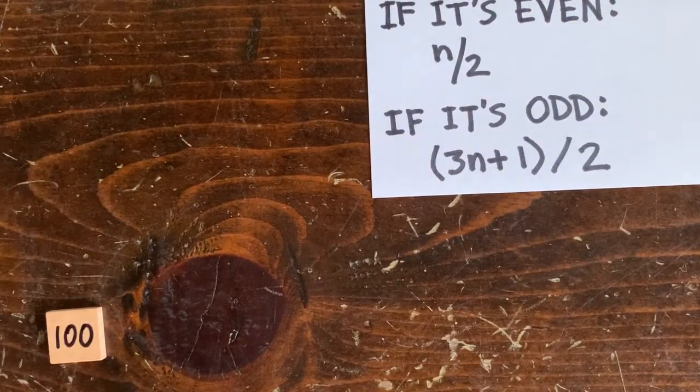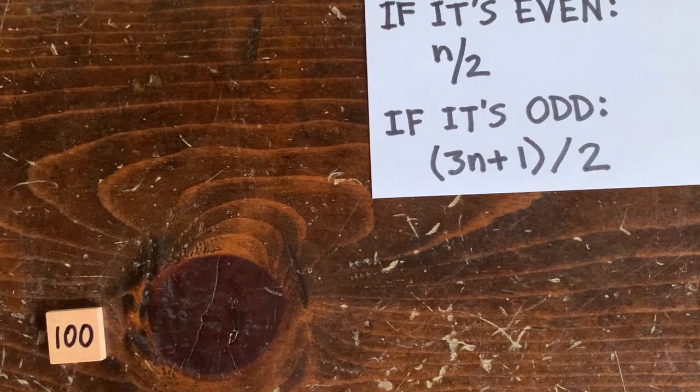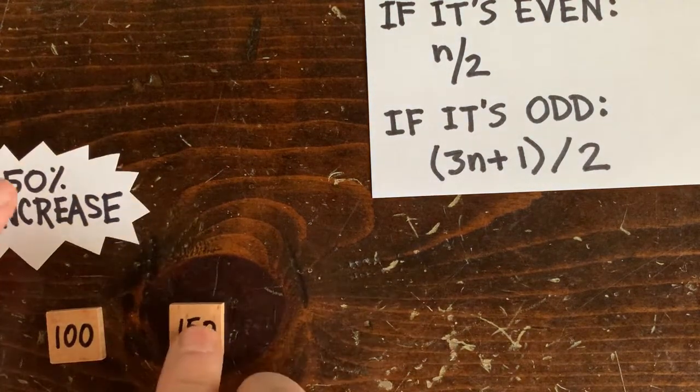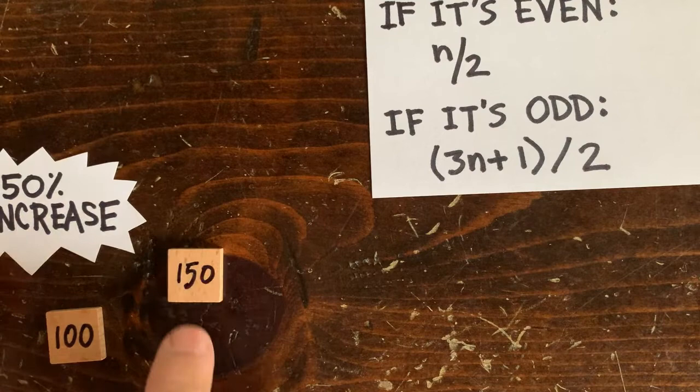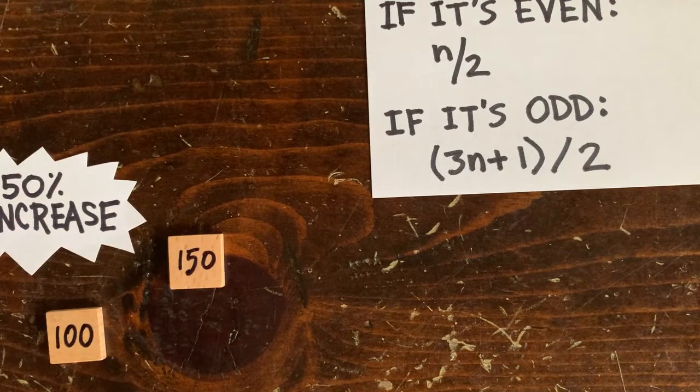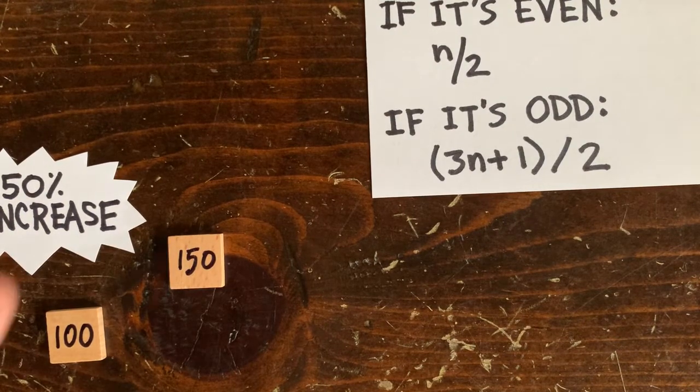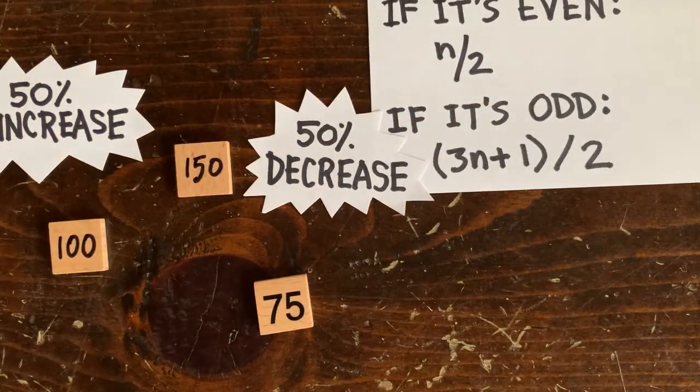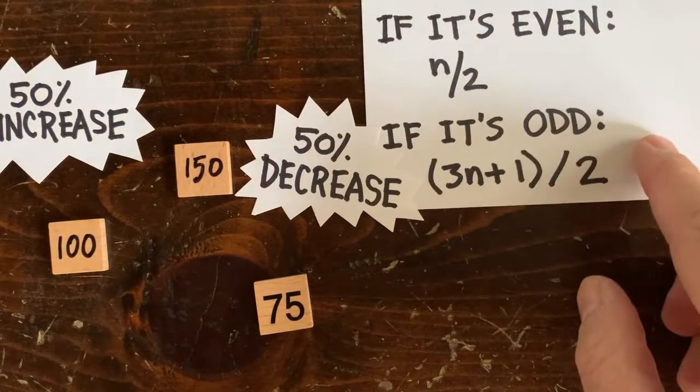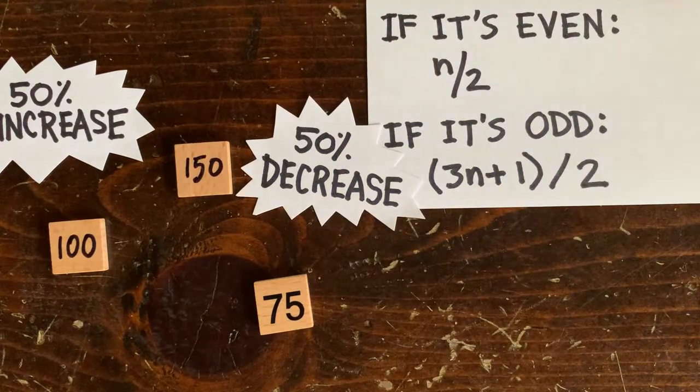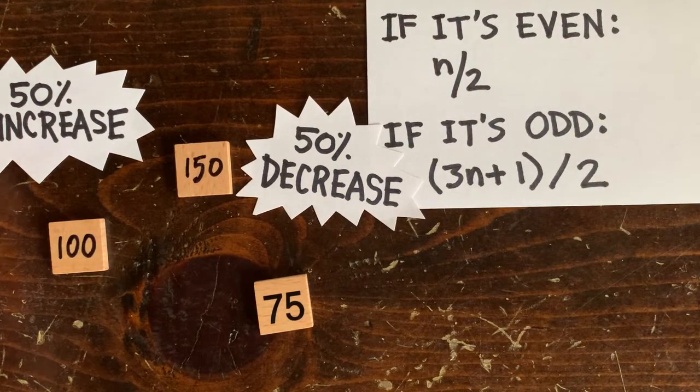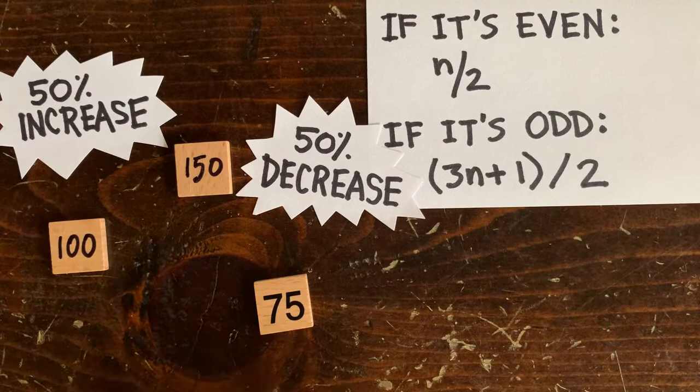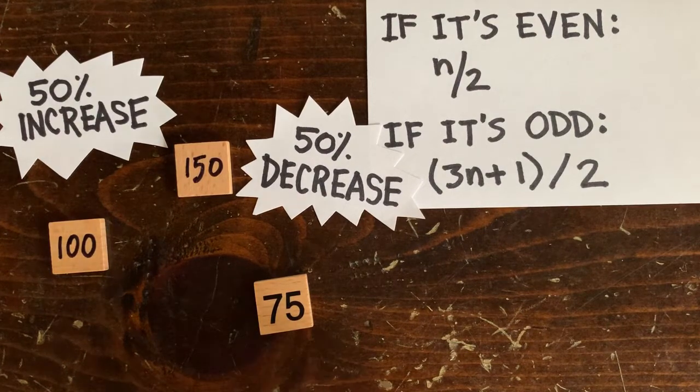So imagine a plane ticket costs $100. You decide to wait. The airline increases the fare by 50% up to $150, then decreases the resulting fare by 50% down to $75. Now you'd think after a 50% increase and a 50% decrease it would have settled back at $100, but actually it wound up much lower at $75. So you were smart to wait.